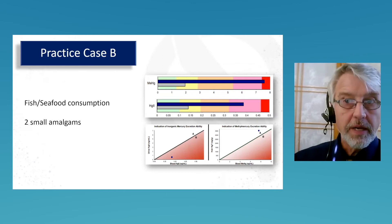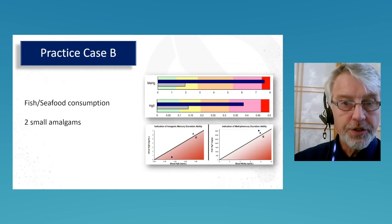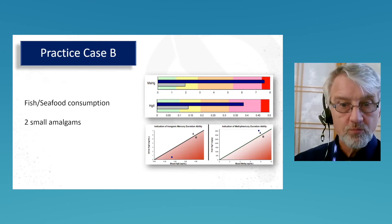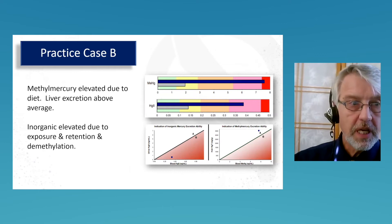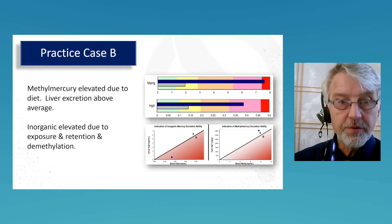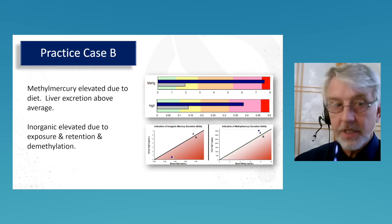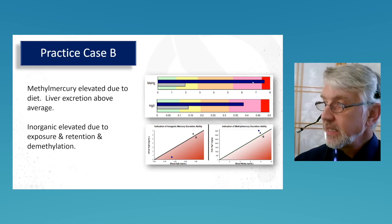Case B: fish and seafood consumption, two small amalgams. Methylmercury is elevated due to the diet, liver excretion is good, and inorganic mercury is elevated due to the exposure from the amalgams combined with retention toxicity from poor excretion, plus demethylation of elevated methylmercury.